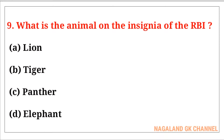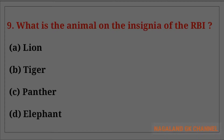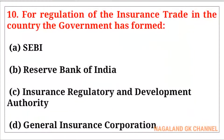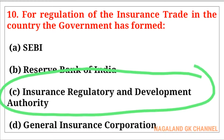Question number nine: What is the animal on the insignia of the RBI? The correct answer is option number C, that is the panther. Question number ten: The correct answer is option number C, that is the Insurance Regulatory and Development Authority (IRDA).